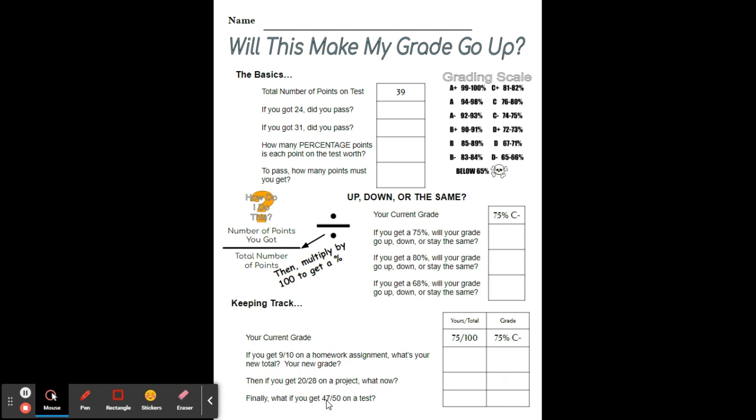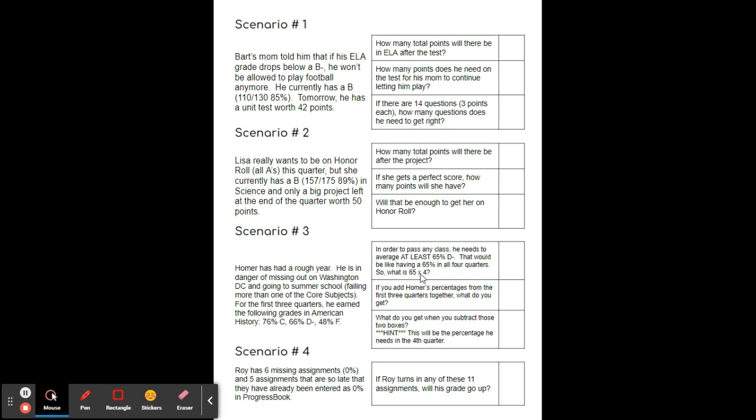And then finally you're going to add 47 out of 50 to your new total. So 47 plus 104 will give you 151, 138 plus 50 is 188. Take what you got divided by the total possible and then multiply it by 100, and you've got it right there. Then as we move on, we will see the back,